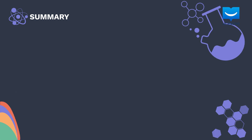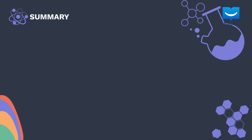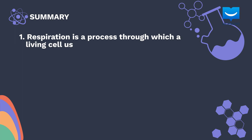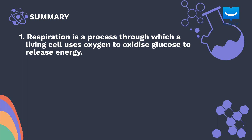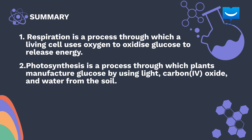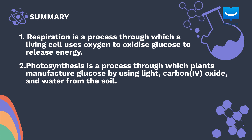Let's do a quick recap of the key points in this lesson. Respiration is a process through which a living cell uses oxygen to oxidize glucose to release energy. Photosynthesis is a process through which plants manufacture glucose by using light, carbon dioxide, and water from the soil. I'll see you in the next lesson.